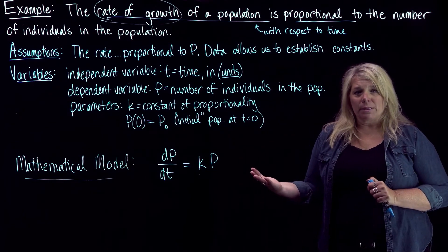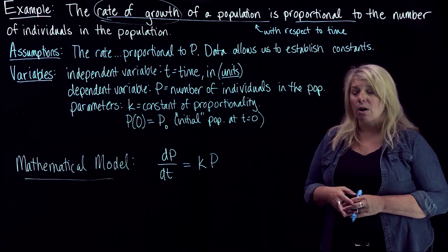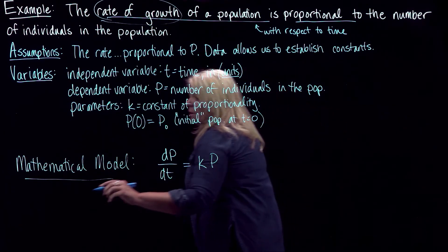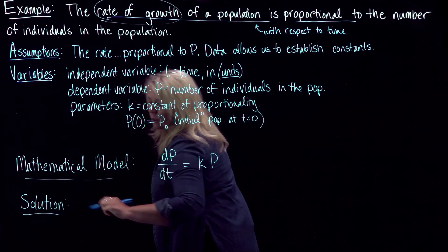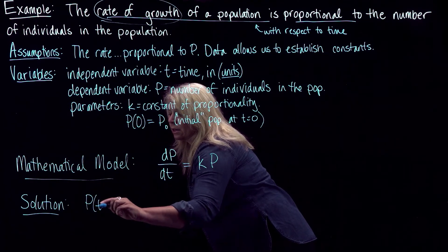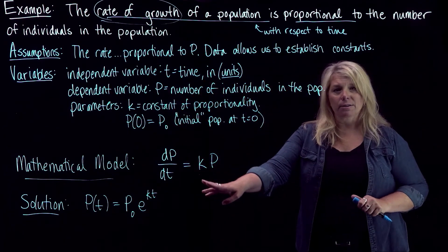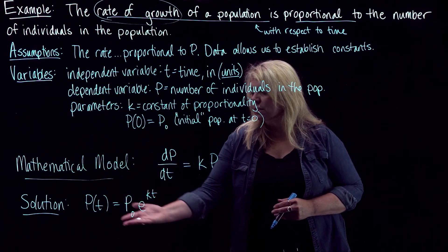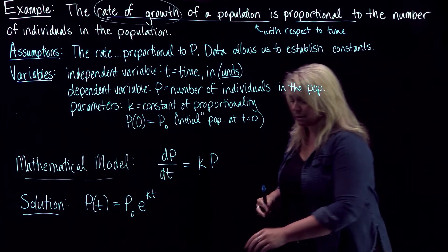We haven't done much with solving differential equations yet since we just started the course, but this might be one you've seen in a calculus class, where it's sometimes taught as a simple example. You could use mathematics to solve that differential equation. When you solve it, you get an equation you'd have seen in previous math classes: p(t) equals p0 times e to the kt. If you haven't seen how to solve that, we'll be doing that in the next couple of days.